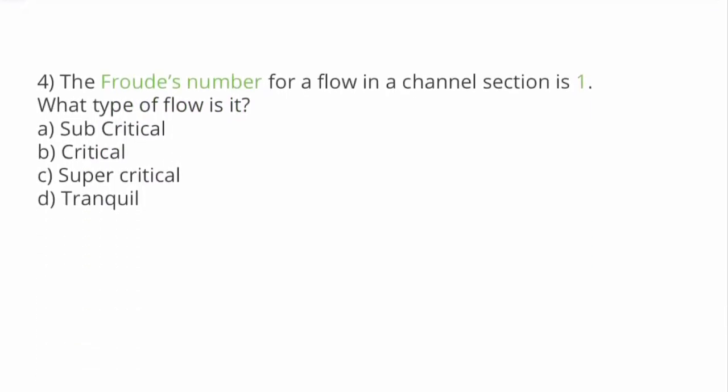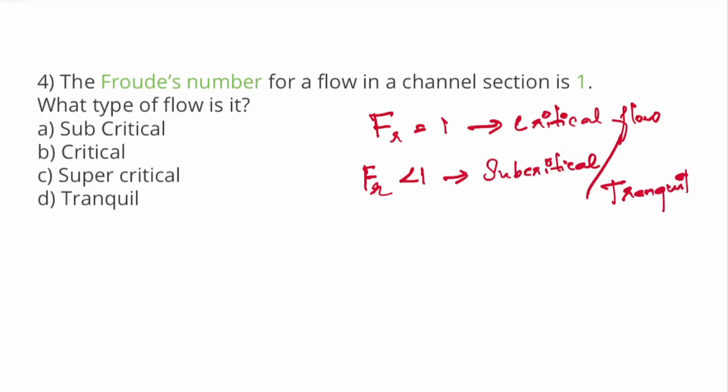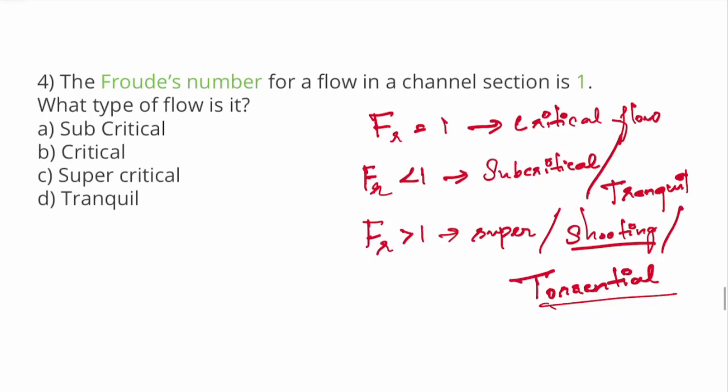Froude number for a flow in a channel section is 1, what type of flow is it? Suppose Froude number is 1, it is critical flow. Suppose Froude number less than 1, it is subcritical or tranquil. If Froude number greater than 1, it is supercritical flow, also called shooting flow or torrential flow.